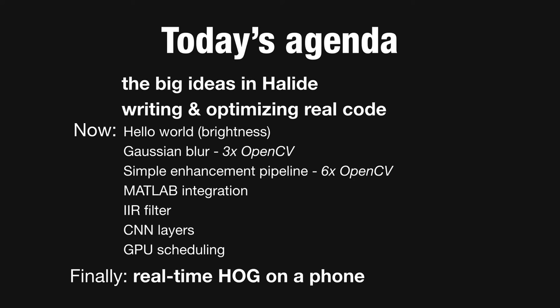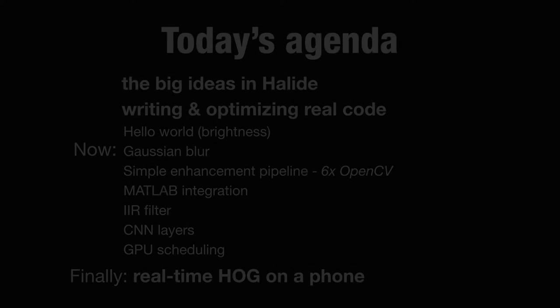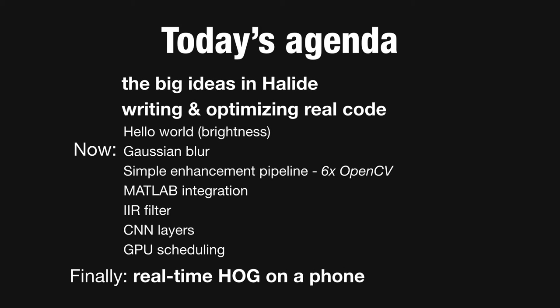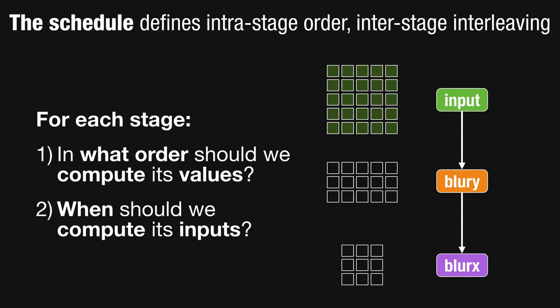Now you can review what we actually did in the Brighton code with its schedule — you should be able to understand what all those operations written in the schedule section of that example do in terms of what I just described. Next you should start reviewing the Gaussian blur example and come back here to understand how to schedule this multi-stage pipeline. The part of the schedule I already discussed was the domain order — in what order should we compute the values inside a given function — and that included splitting, vectorizing, parallelizing, etc.